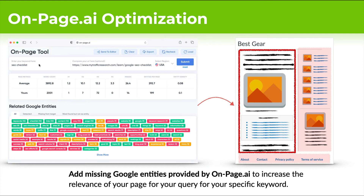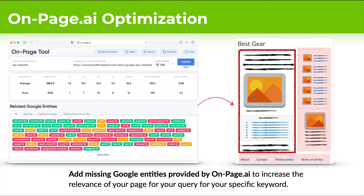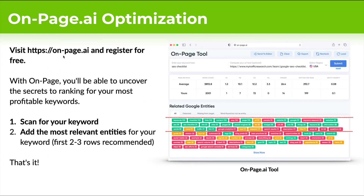It ignores the ads and all the misleading information and returns essentially the Google entities — the entities you can add to your page to increase relevance. You put in your keyword, scan for whatever you want, and it returns all the entities for you to add to your page. You can visit onpage.ai and register for free to uncover the secrets to ranking for your most profitable keywords. I recommend adding the first two or three rows of terms returned — this increases the relevance of your page. If you want to go all-in, add rows four, five, and even six and get it all green. When Google's AI comes back and crawls your page, it'll see all the terms it expects and say, 'This must be a highly relevant page for that term.' And that's when you profit.